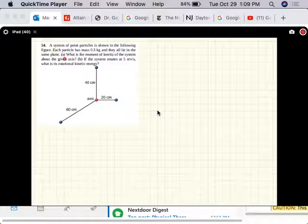This problem says a system of point particles is shown in the following figure. Each has a mass 0.3 kg and they all lie in the same plane. What is the moment of inertia of the system about the given axis?